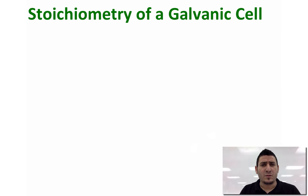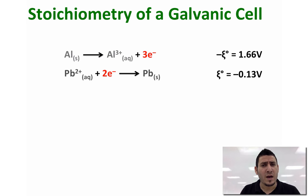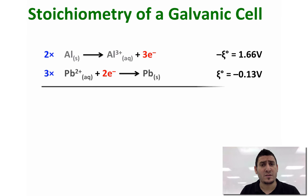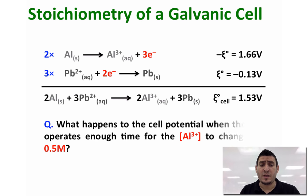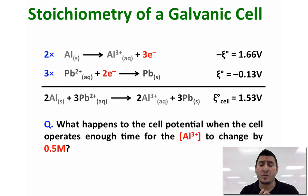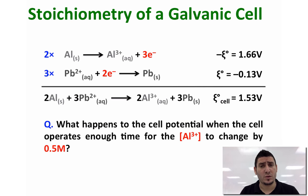Let's remember the redox reaction in this cell. You can go back to my previous video on standard reduction potential to review how to calculate the standard cell potential. The question now is: what happens to the cell potential when the cell operates long enough for the concentration of Al³⁺ to change by 0.5 molar?